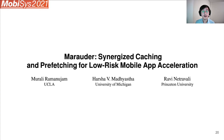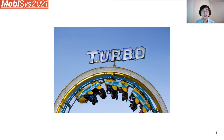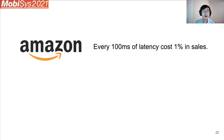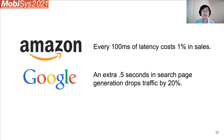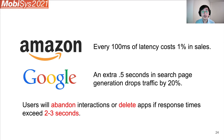The next paper is Marauder, and the topic is mobile app responsiveness — meaning how quickly an app can respond to user requests. Responsiveness has always been a big concern for researchers, because if there's a delay, we immediately associate that with something going wrong. You can find various statistics on the web about how users behave if things slow down. For example, Amazon says every additional 100 milliseconds of latency costs them 1% in sales, and Google says an extra 0.5 seconds in search page generation time dropped traffic by 20%. The Marauder paper also cites papers saying users will stop using apps or delete them if response times exceed 2-3 seconds.